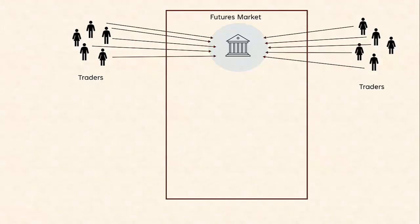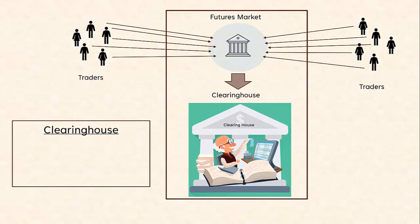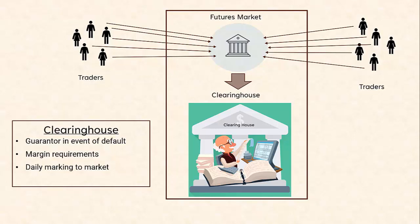The Futures Market has two pieces. There's the Exchange, where traders trade, and then there's the Clearinghouse. The Clearinghouse acts as a guarantor to the members on the Exchange, thereby ensuring contract fulfillment if either party defaults. They do this through margin requirements and daily marking to market. One of the other benefits of a Clearinghouse is that it allows traders to close a position before maturity through offset. Offset trades are explained in a separate video, which should be viewed after this one.